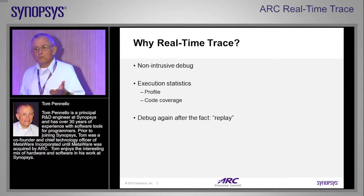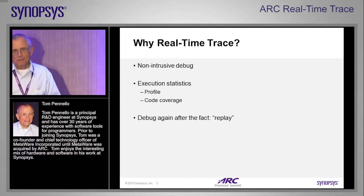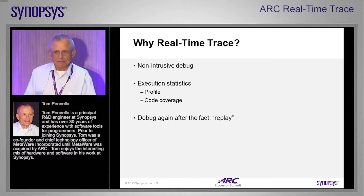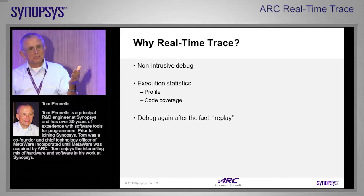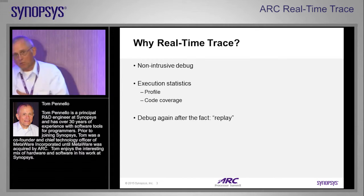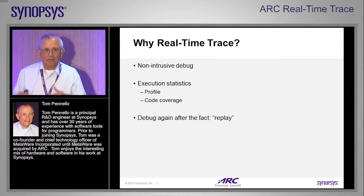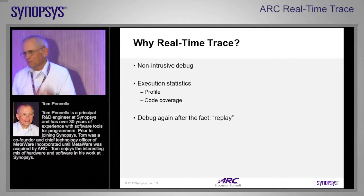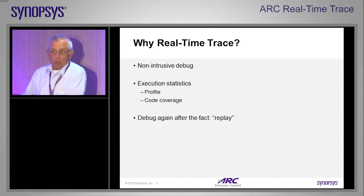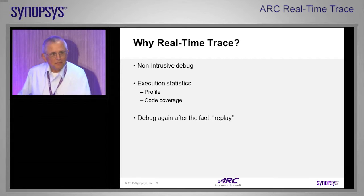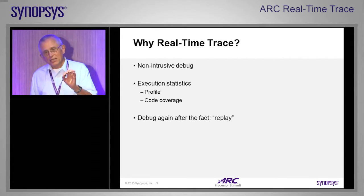This kind of reminds you of when you take your car to the dealership and you say, when I started this morning, it made this noise. And then he tries, and it doesn't make the noise. Sometimes when you're debugging a program and you have a debugger, you insert breakpoints, it changes the behavior of your program, and then you can't debug it. The program misbehaved, but now with the debugger it works. So real-time trace is one way you can debug a program without changing its behavior.